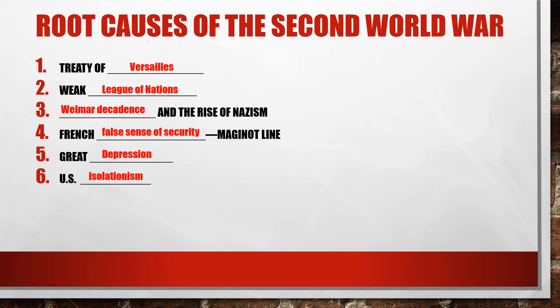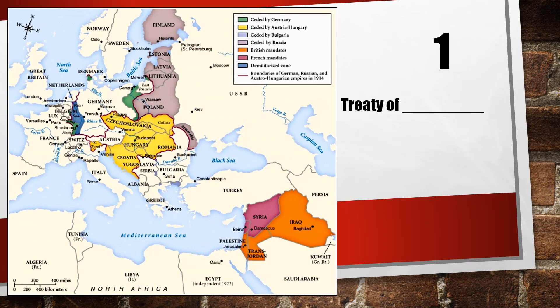The US, after suffering around 114,000 to 115,000 killed in World War I, said they were not getting involved in European affairs any longer. Looking at the Treaty of Versailles map, you can see it dividing up territory. To the west, France and Germany — that border where the French have occupied German territory. There's already tons of animosity between these two.